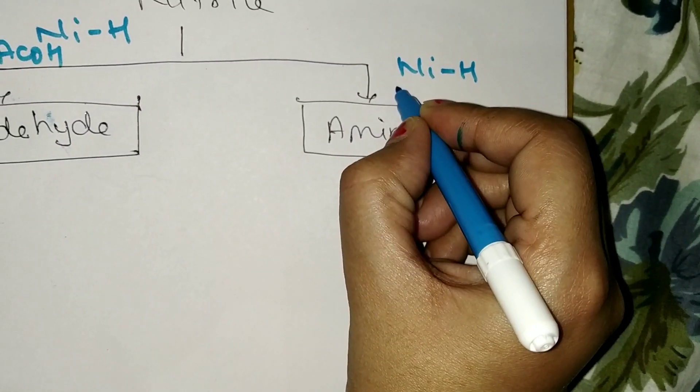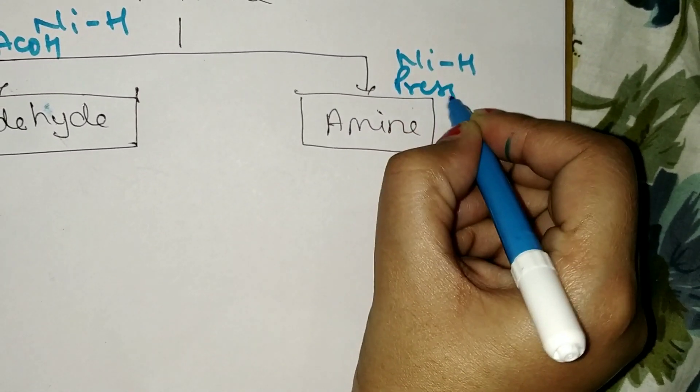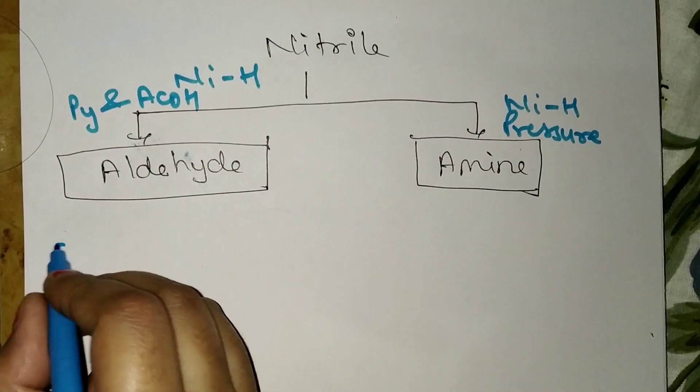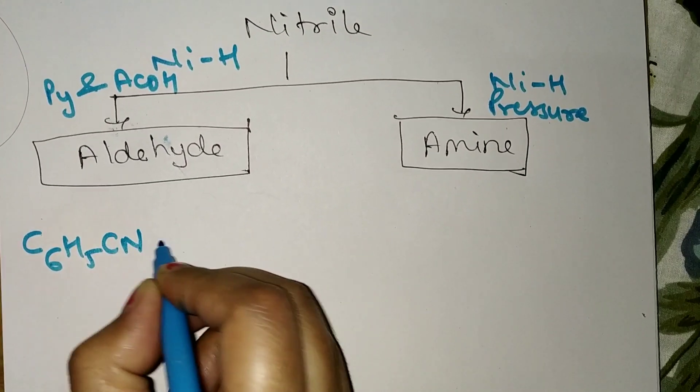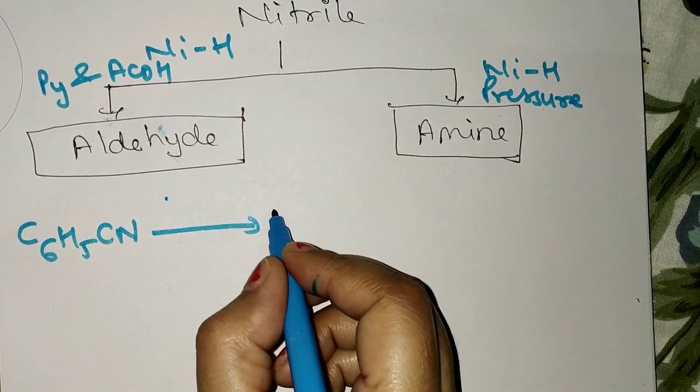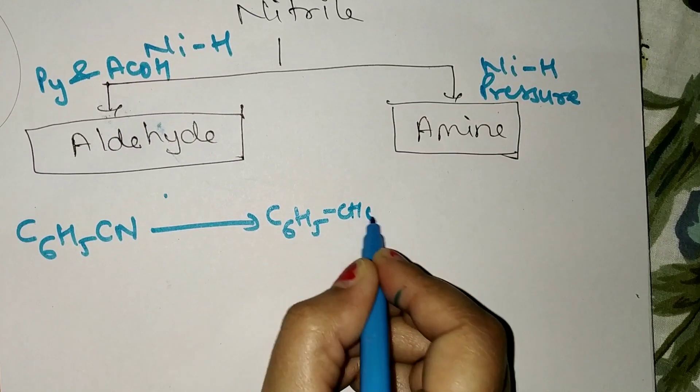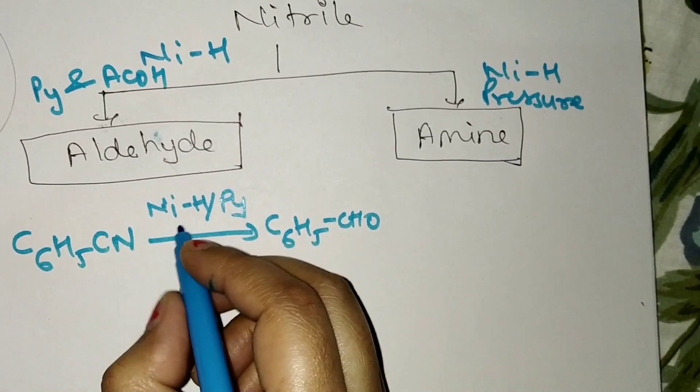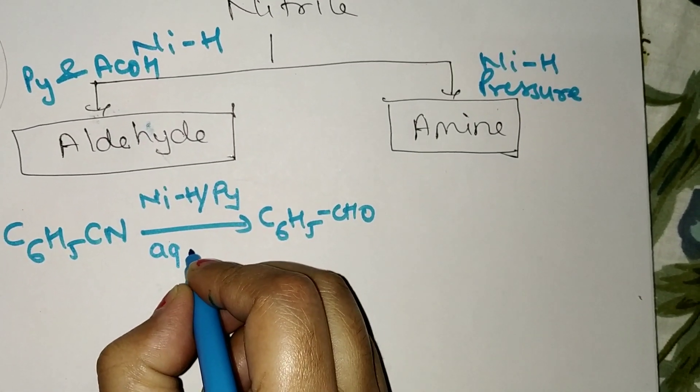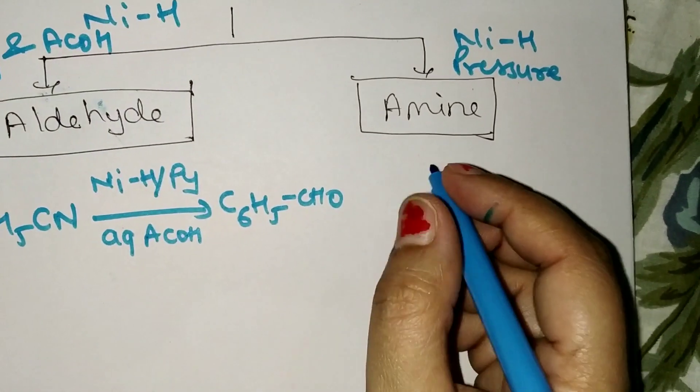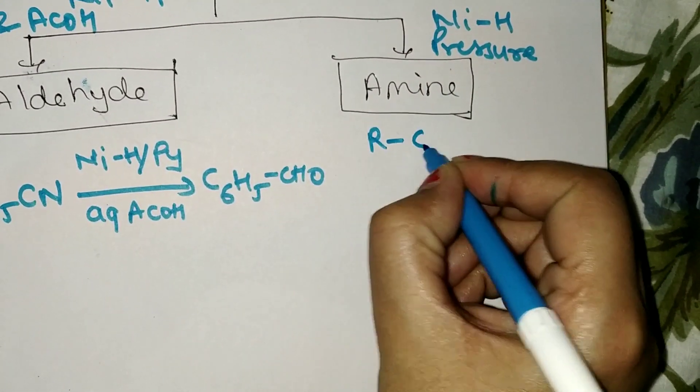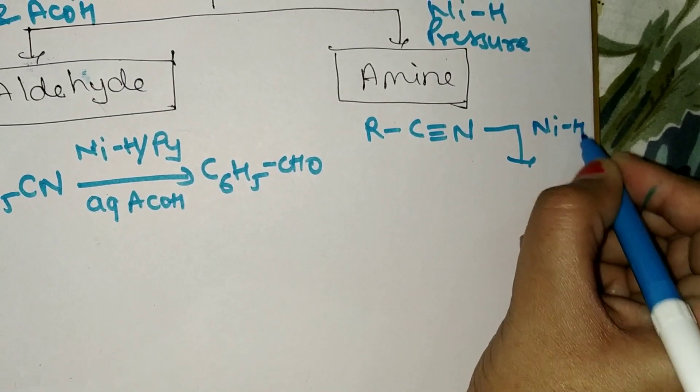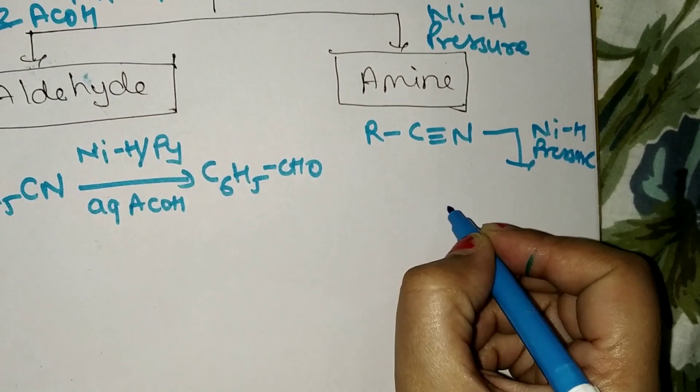Raney nickel under pressure changes nitrile into amine. For example, C6H5CN changes into aldehyde in the presence of Raney nickel, pyridine, and aqueous acetic acid. With Raney nickel under pressure, it changes into amine.